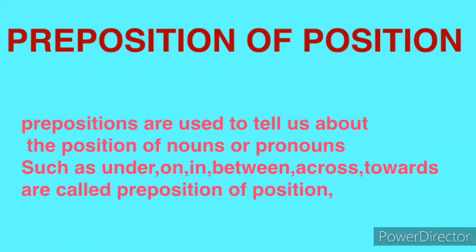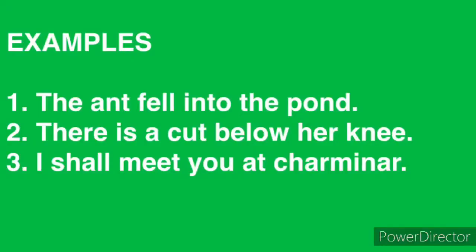Prepositions of position are used to tell us about the position of a noun or pronoun — such as under, on, in, between, across, towards, etc. Examples: 'The ant fell into the pond' — here 'into' is the preposition of position. 'There is a cut below her knee' — here 'below' is the preposition of position. 'I shall meet you at Charnar' — here 'at' is showing the preposition of position.